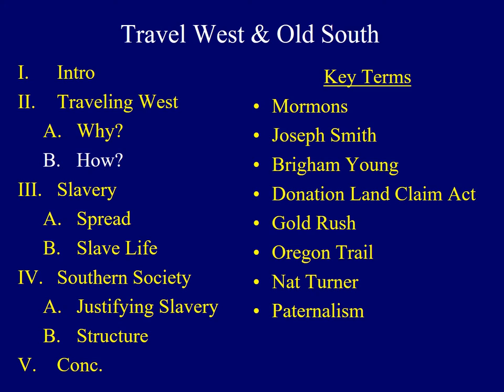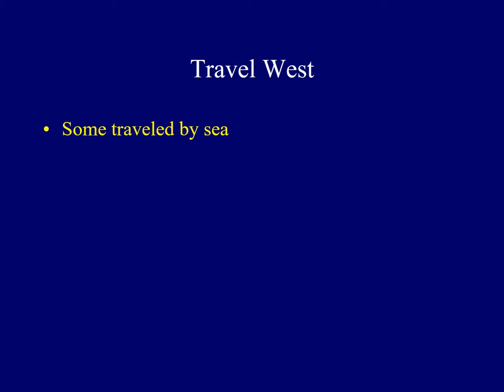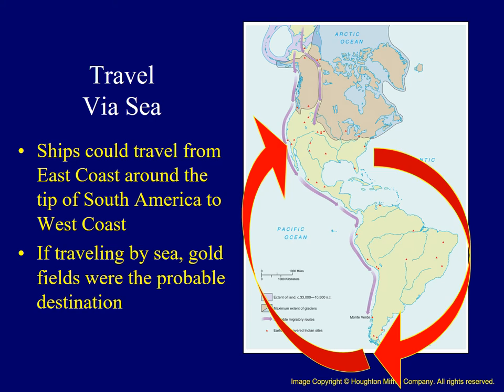Now that we've explored why people traveled to the West, we can investigate how they undertook their journeys. Some traveled to the West by sea. It was an expensive way to travel, but also quicker. For those living along the East Coast who had enough money, they could take a ship. Passengers were transported from the Atlantic coast all the way around the tip of South America and onward to the West Coast, as the Panama Canal had not yet been built.